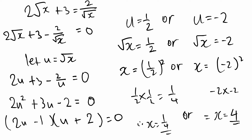Disguised quadratics are really simple if you just think it through. Just see what things are in common, how you can rearrange or outsmart the question to sort of rearrange it in the easiest way possible. Just replace the complicated expressions with a letter. That's it.